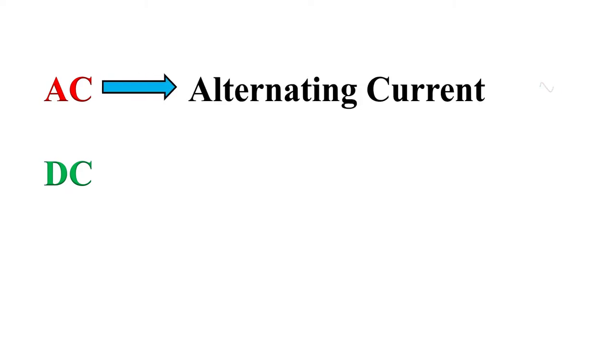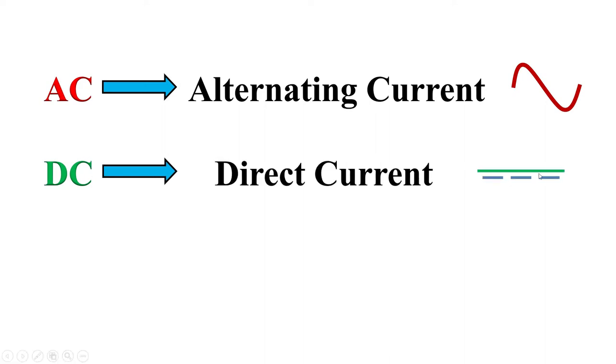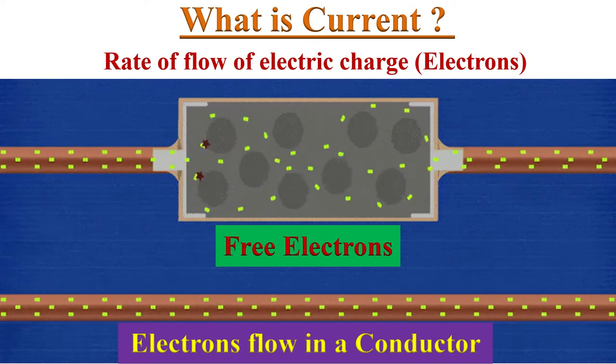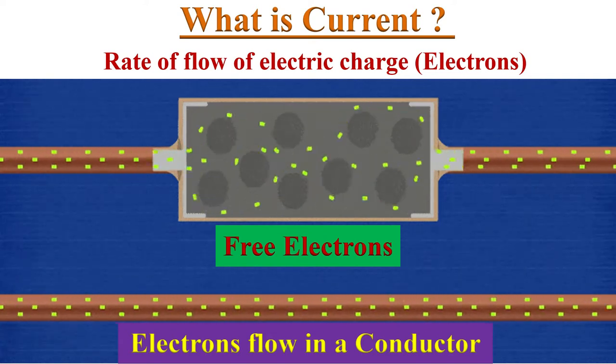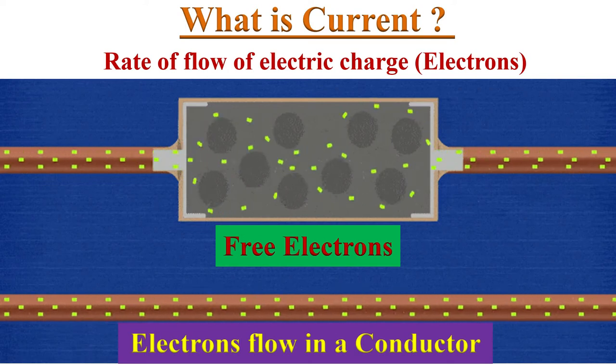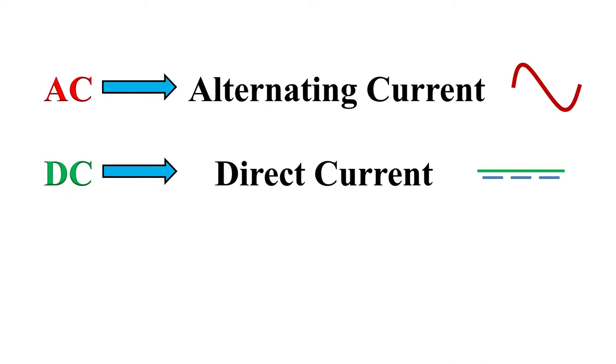AC stands for alternating current, represented with this type of symbol. DC stands for direct current, represented with this type of symbol. We have already discussed in previous video what is current. Current is nothing but rate of flow of electrons in a conductor. Then, what is alternating current and what is direct current?